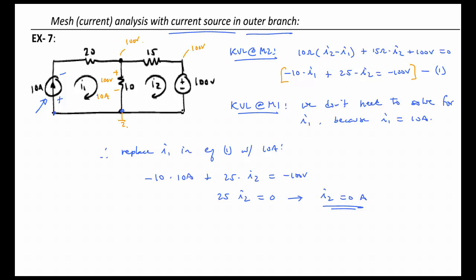And this node here we just found to be 100 volts because of the 10 amps flowing through the 10 ohm resistor. So the voltage across this 15 ohms is zero volts, and therefore I2 is going to be zero volts over 15 ohms, so it's zero amps. And that's how we have I2 equal to zero amps.